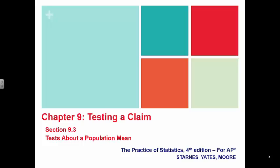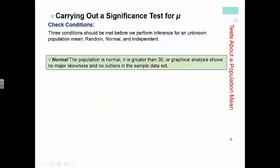Keeper 9.3: test about a population mean. Just like last Keeper, we're doing a significance test. This time we're talking about means or averages.